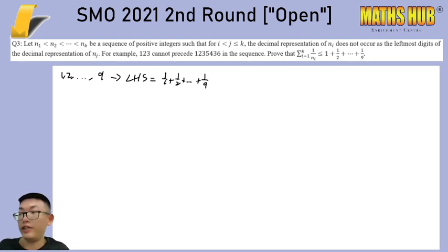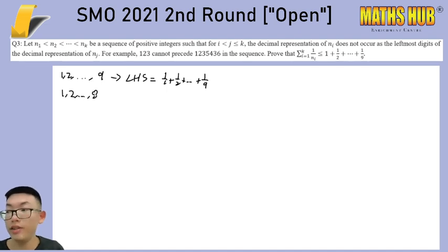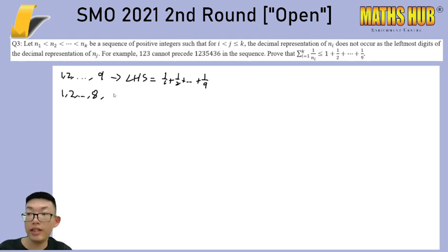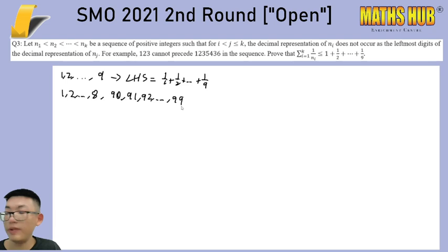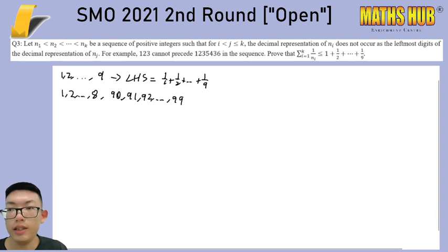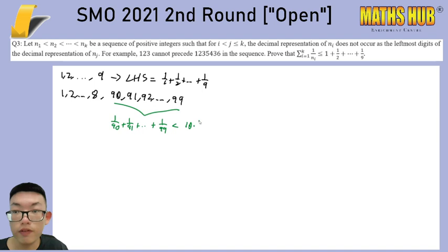But if we don't start with 1 to 9, what other sorts of things can we do? For instance, let's say we did 1 to 8. And then for 9, we don't actually want to use 9 as 9 itself. Well, that means we can do something like 90, 91, 92 until 99. And if we did that, now we're stuck, because we've used 90, 91, 92 until 99, so there is no more space left. We also notice that 1/90 + 1/91 + ... + 1/99 is actually going to be smaller than 10 times 1/90, which is 1/9.